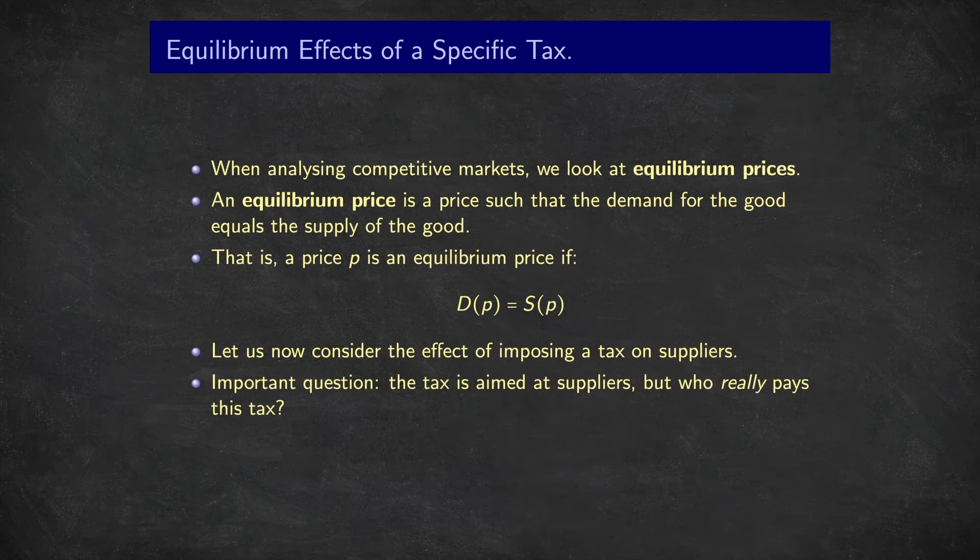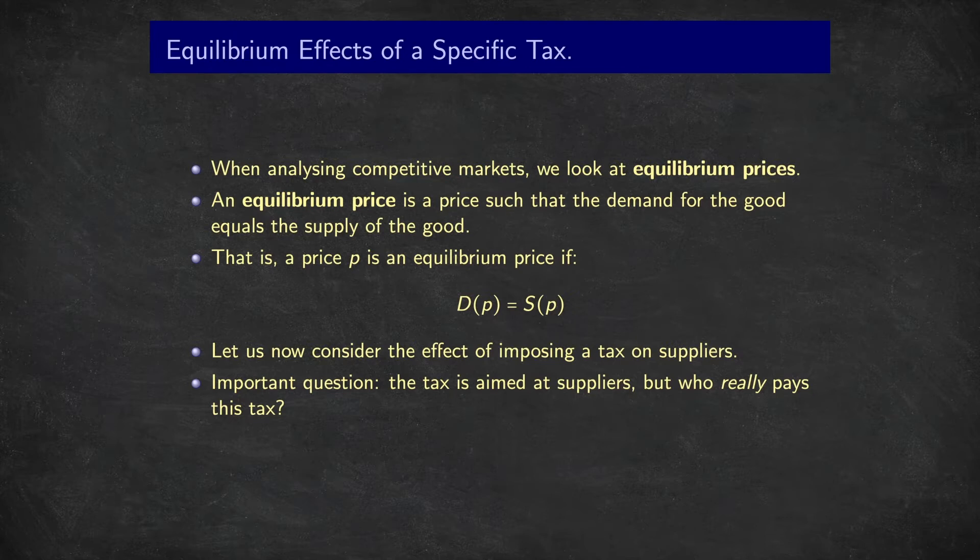When analysing competitive markets, remember from our last lecture that we look at equilibrium prices. Now these are magic things. An equilibrium price is a price such that the demand for the good equals the supply of the good.